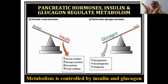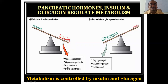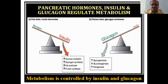The insulin-glucagon balance is very important. When insulin is dominant — glucagon is less — these things happen: increases in glucose oxidation, glycogen synthesis, fat synthesis, and protein synthesis. This diagram is opposite when glucagon is dominant in the body — the patient will become diabetic. Gluconeogenesis increases and ketogenesis increases. Metabolism is controlled by insulin and glucagon.